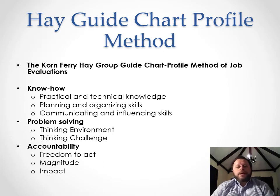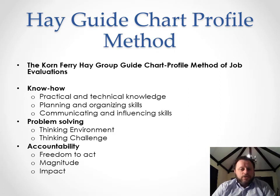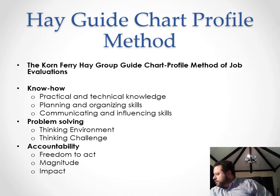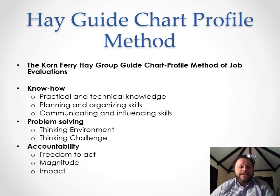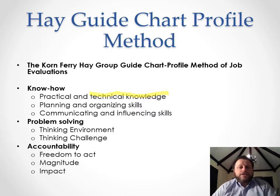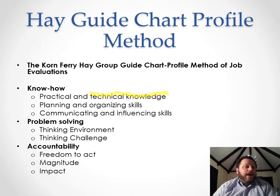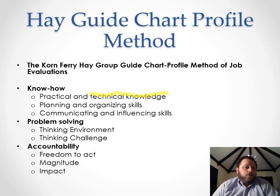One way we establish relative worth is by looking at something called the Hay Guide. The Hay Guide separates worth into three categories that talk about the skills and duties required in jobs — not specific duties, but more general ones. For example: do you need a lot of technical knowledge? A marketing manager needs technical knowledge about marketing platforms, print versus website versus television.